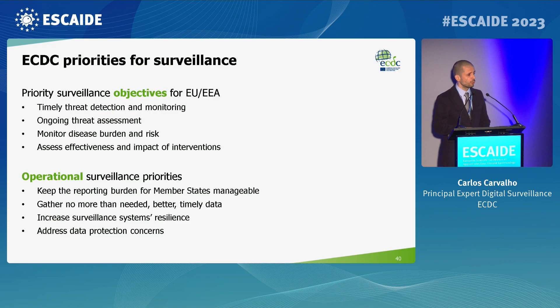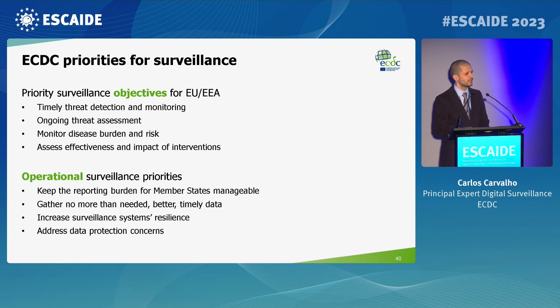Moving to priorities: four surveillance objectives are to have timely threat detection and monitoring continuously, to have ongoing threat assessments, to monitor disease burden and risk, and to assess the effectiveness and impact of interventions. Operationally, we want to keep reporting burden for member states manageable — gathering no more data than needed, but collecting needed data in a timely and efficient way. We also want to increase resilience of surveillance systems so they are ready to withstand another pandemic-like situation.